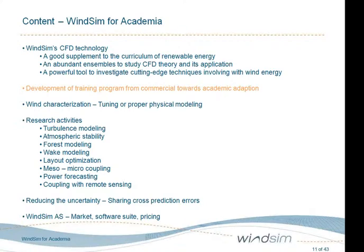I will go through research activities where we have been involved and where we think we could have great help from academia. There will be slides on these topics: turbulence modeling, atmospheric stability, forest modeling, wake modeling, layout optimization, meso-micro coupling, power forecasting, and coupling with remote sensing devices. At the end, some thoughts about how we can reduce uncertainty and share data in order to evaluate the errors we actually make when using a numerical model. The last part will be taken by Donna.